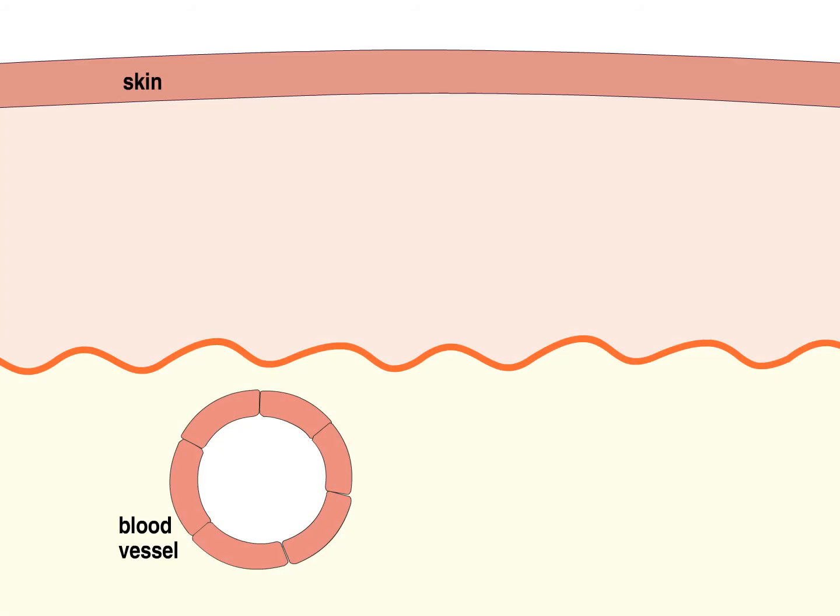Dendritic cells, the key antigen-presenting cells of the immune system, are generated from progenitors in the bone marrow that migrate into peripheral tissues through the bloodstream.